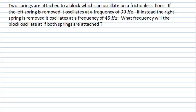A good starting point for this question is to try and imagine what we're dealing with. We've got two springs which are attached to a block on a frictionless floor. And we're told that one spring is attached on the left and one spring is attached on the right. So our diagram should look something like this.